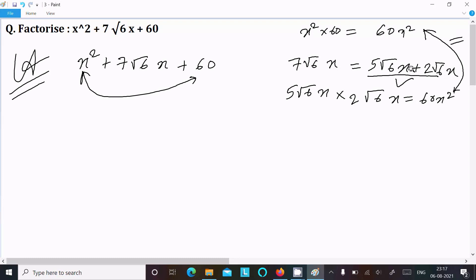So writing here x² + 5√6x + 2√6x + 60. Now take the common, so x is common.